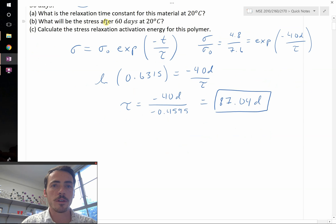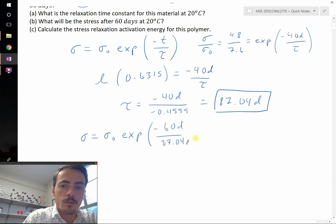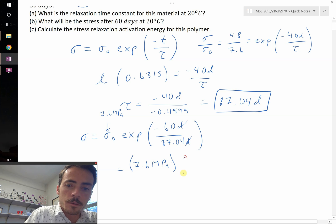So part B says what will the stress be after 60 days at 20 degrees Celsius. Now we simply have to use the time constant that we just determined, and we're going to solve for a new sigma. So sigma now at 60 days, we're going to have the same initial applied stress sigma naught, multiplied by the exponential of 60 days now, divided by our time constant at this temperature which we just solved for, 87.04 days. The days cancel out. We know that the initial value was 7.6 megapascals. We end up with 7.6 megapascals multiplied by 0.5019, which is equal to 3.8 megapascals. So that's part B. After 60 days, our stress is reduced all the way down to 3.8 megapascals.